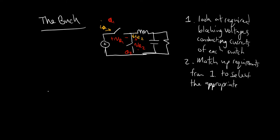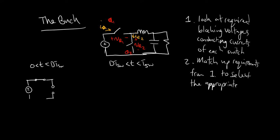How do we do that? We break it up into the two switching states over the switching period TSW. In the first switching state, Q1 is on and Q2 is off, so the circuit looks like this. I'll explicitly show you where Q1 and Q2 are so we can think about the voltages and currents being applied to them.